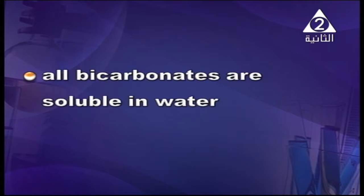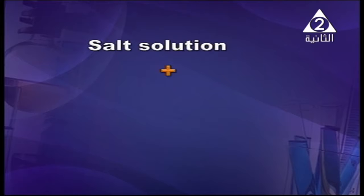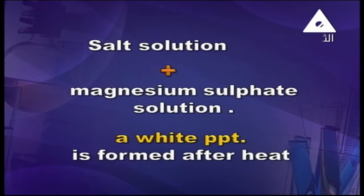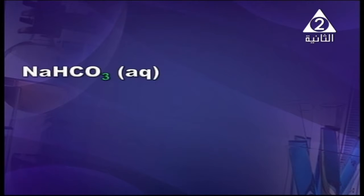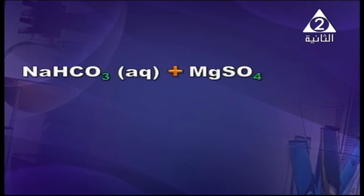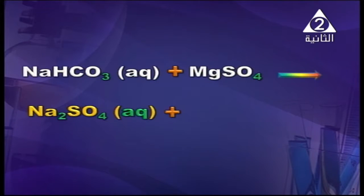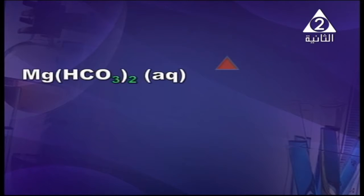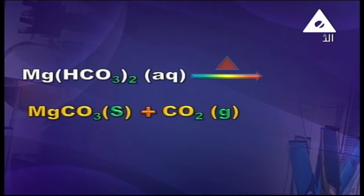All bicarbonate are soluble in water — very important to know that. Salt solution plus magnesium sulfate solution: a white precipitate is formed after heating — because carbonate forms in the cold reaction. NaHCO₃ added to MgSO₄ gives Na₂SO₄ plus water plus Mg(HCO₃)₂. Magnesium bicarbonate, by heating, gives magnesium carbonate plus carbon dioxide — because we have CO₃ — plus water. This is the confirmatory test for bicarbonate.